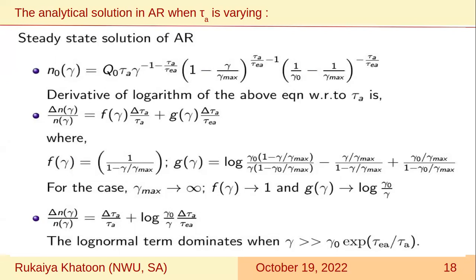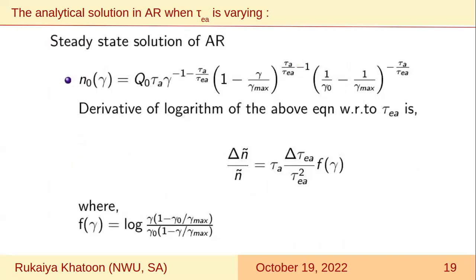We can also estimate the electron Lorentz factor for which the log-normal term dominates over the Gaussian term. If the Lorentz factor is much greater than γ times exp(τ_a/τ_a), the log-normal term will be dominant. Similarly, we see how a perturbation on the escape timescale in the acceleration region introduces variation in the particle number density. We take the derivative of the logarithm with respect to τ_ea — the escape timescale in the acceleration region. From this solution, we see the particle number density distribution will be neither Gaussian nor log-normal; it will be a skewed one.